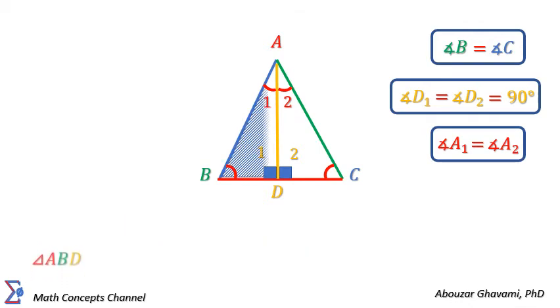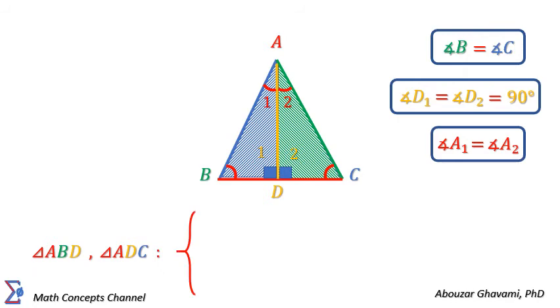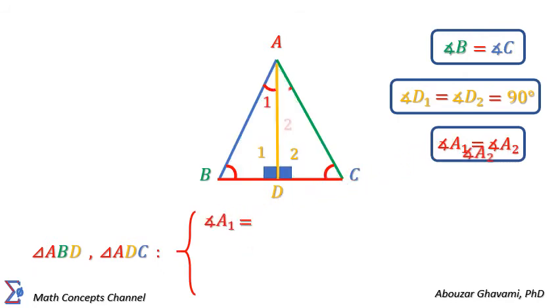In triangles ABD and ADC, we have angle A1 is equal to angle A2. Side AD is common in both triangles. And angle D1 is equal to angle D2.